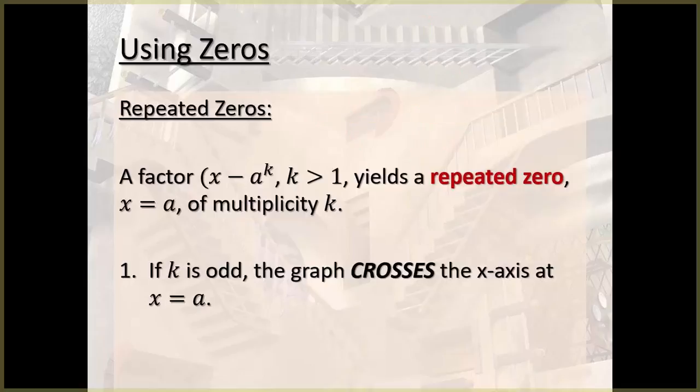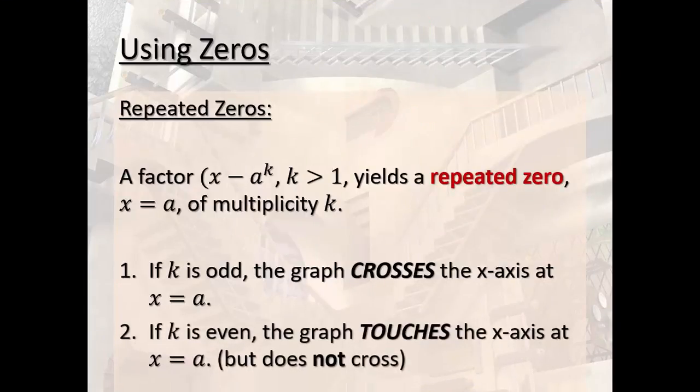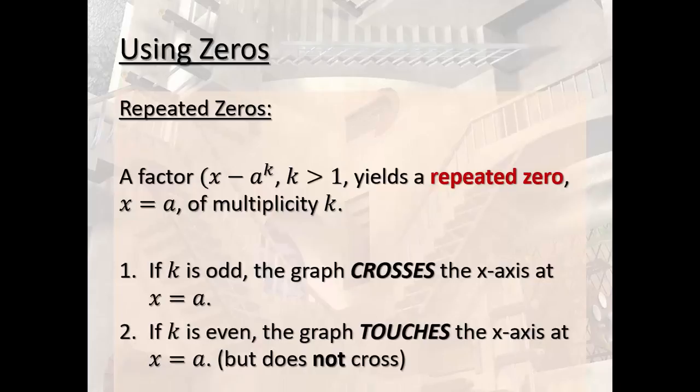All right. Now, I know this may not make a whole lot of sense yet, but just bear with it. If the multiplicity is even, then the graph touches the x-axis at a but does not cross.